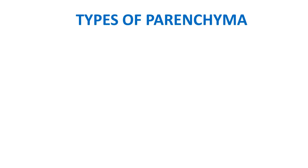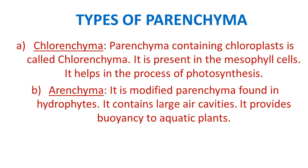There are different types of parenchyma. Chlorenchyma is a type of parenchyma which contains chloroplasts; it is present in mesophyll cells and is responsible for the process of photosynthesis. Aerenchyma is another type of parenchyma which has air spaces between the cells and is present in hydrophytes — water plants. Because of the presence of air cavities, it is called aerenchyma, and it mainly provides buoyancy to aquatic plants.